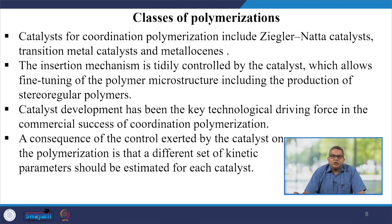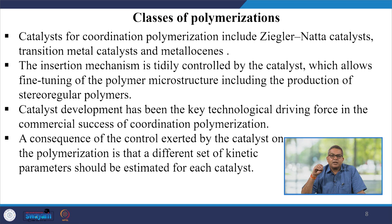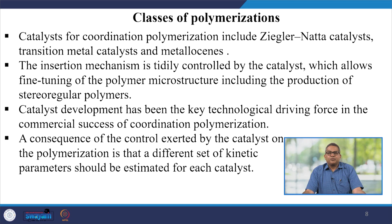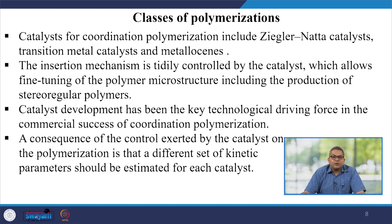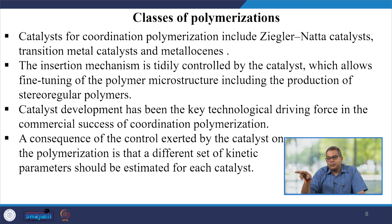Catalysts for coordination polymerization include the Ziegler-Natta catalyst, which we discussed in the previous lecture, transition metal catalysts, and metallocenes. The insertion mechanism is tightly controlled by the catalyst, which allows fine tuning of polymer microstructure including the production of stereoregular polymers. Catalyst development has been a key technological driving force in the commercial success of coordination polymerization. The consequence of the control executed by the catalyst on the polymerization is that a different set of kinetic parameters should be estimated for each catalyst — that is why the study of polymer reaction engineering is important.